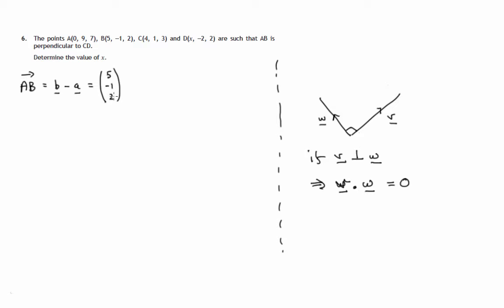So 5, negative 1, 2, minus position vector of point A, 0, 9, 7. So performing that subtraction, X component will be 5 minus 0, 5, negative 1 minus 9 for Y component, and 2 minus 7, that's negative 5 for the Z component. Similar type of calculation for C to D.